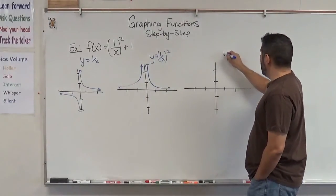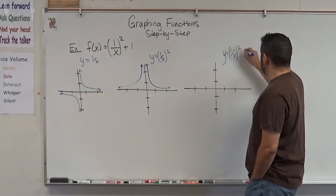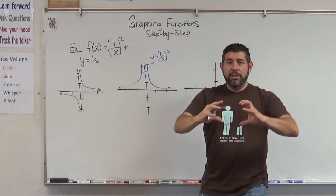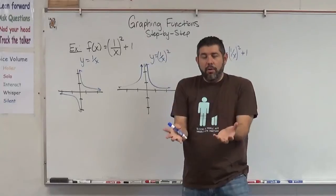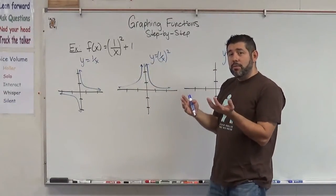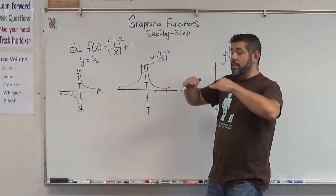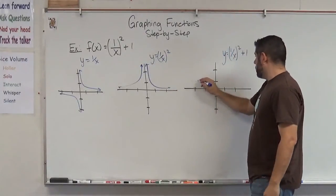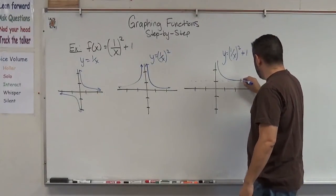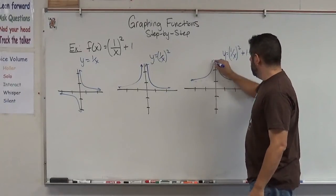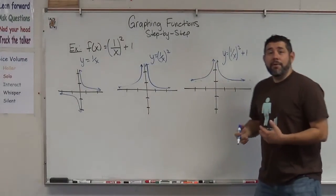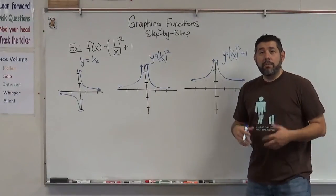Now we're going to take 1 over x squared and add 1. Adding 1 takes the entire graph and shifts it up one unit. We've got a horizontal asymptote at y equals 0, so we shift that up and now our horizontal asymptote is at y equals 1. And there's our graph of y equals 1 over x squared plus 1.